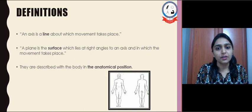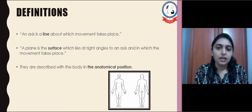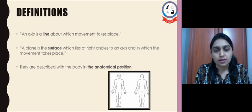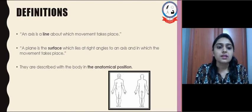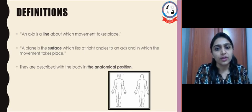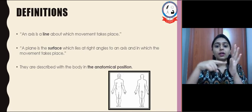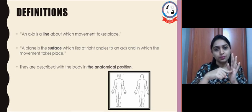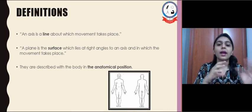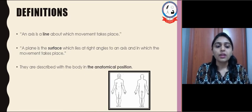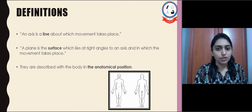Next is the definition of axis and plane. An axis is a line about which movement occurs. A plane is a surface which lies at a right angle to an axis, in which movement occurs. These axes and planes are described when the body is in the anatomical position.